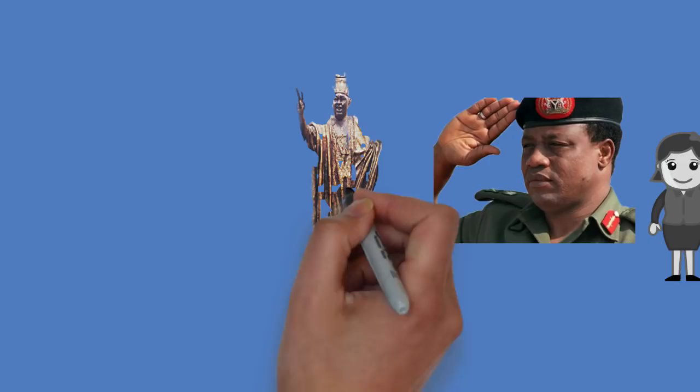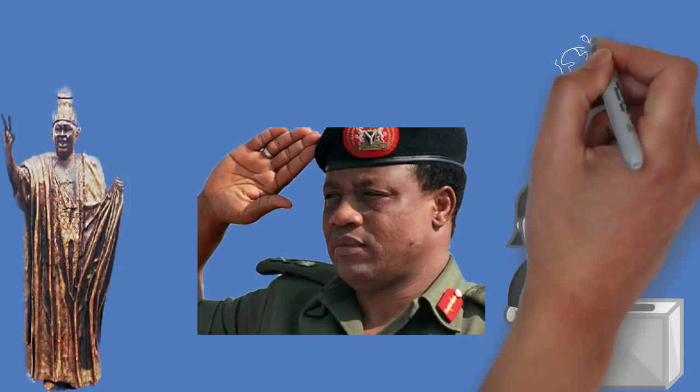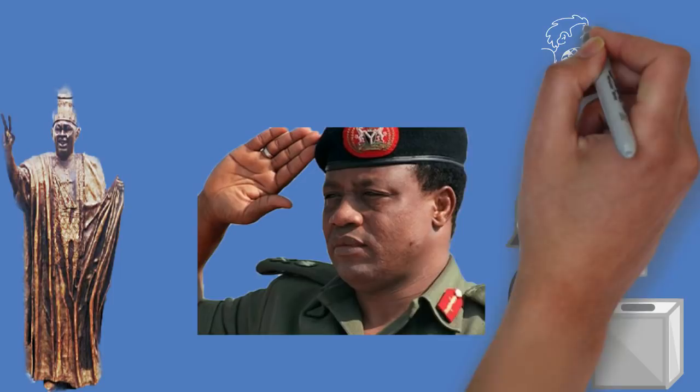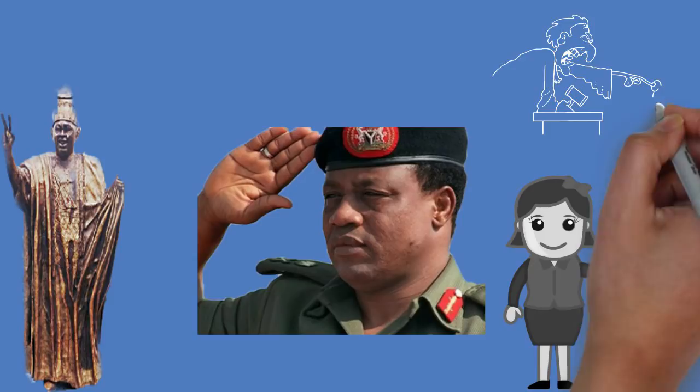Babangida was accused of killing Dele Giwa, a magazine editor, with a letter bomb in 1986. The Oputa Panel report set up by President Obasanjo invited Babangida for questioning, but he never obliged. The panel concluded that Babangida was responsible for the death of Dele Giwa by a letter bomb.